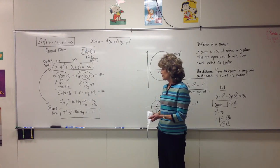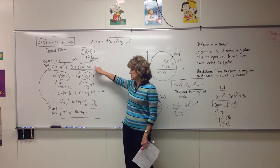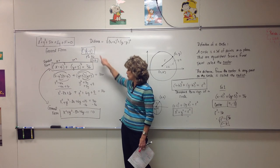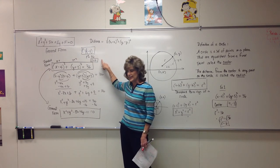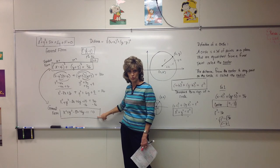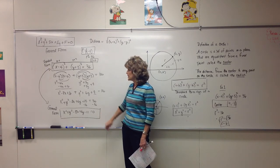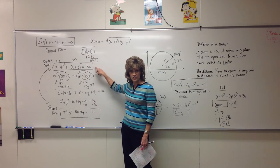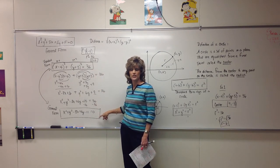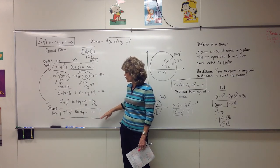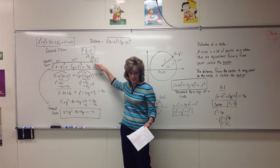Standard form and general form are two different equations that describe the same circle — they look completely different. Standard form is an advantage when you need to graph because you can see the center and the radius. Sometimes you'll be given the equation in general form, so you need to go back and forth from one to the other. We've gone from standard to general; in another video, I'll show you how to go from general back to standard.